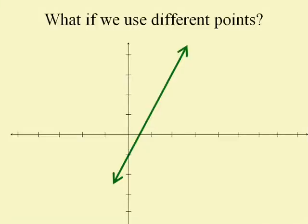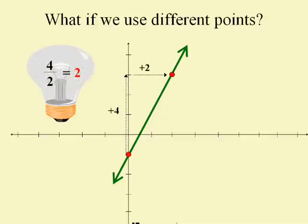What if I use different points — this point and this point? I should still get the same answer, and I do. Between those two points I go up four and over two. Four over two still equals two if you reduce. You always have to remember to reduce, and they may not tell you that.